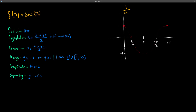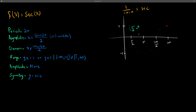Let's start with secant. Secant equals one over cosine x. To derive the secant graph, we look at the cosine graph and plot points. The first point at y equals one gives us one over one, which equals one. At x equals pi over two, y equals zero, and one over zero is undefined, so we get a vertical asymptote there.